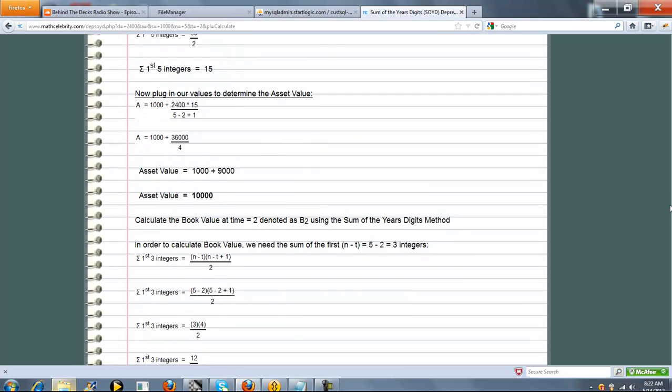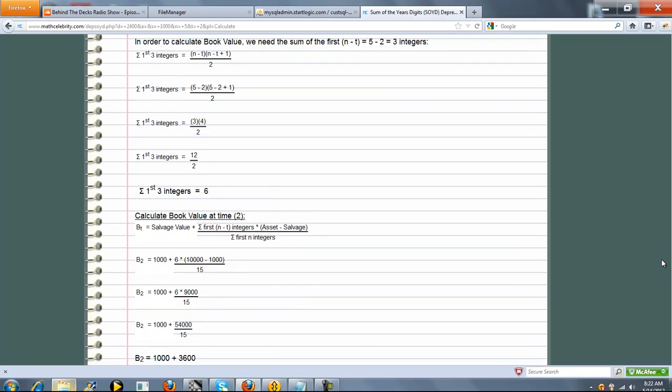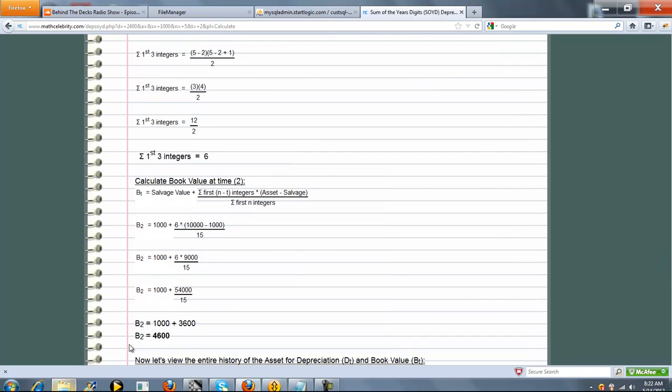Next is calculate the book value at time 2. Again, we just did this last time, so I'll just run through this fairly quickly. And again, the book value is 4600.